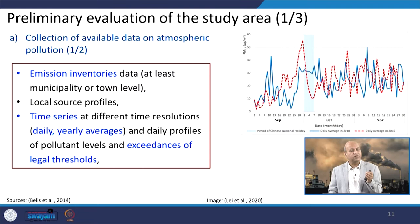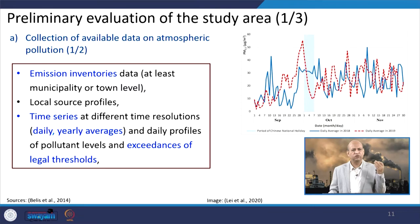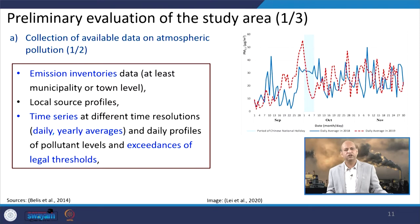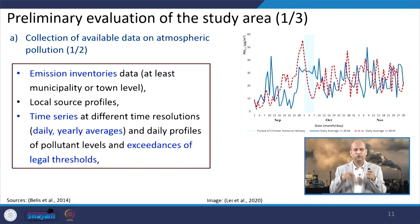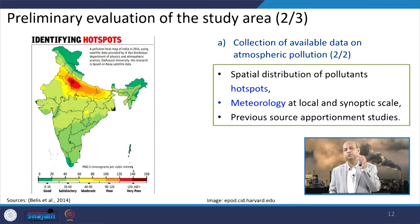We examine local source profiles — different sources, their profile intensity, which fuels they use — and time series data at different resolutions like daily or yearly averages. Concentration profiles are compared with threshold values like National Ambient Air Quality Standards (NAAQS) to determine whether they exceed standards, helping identify which species are most important to study.